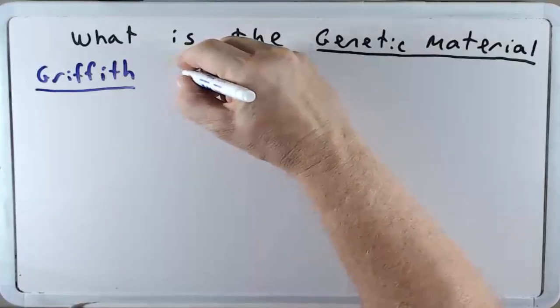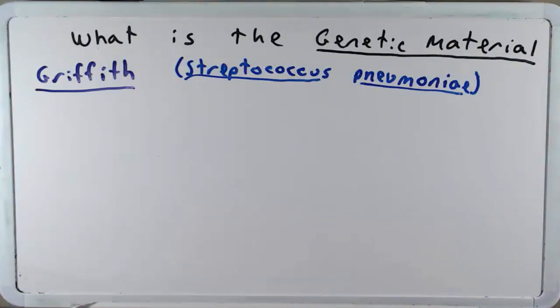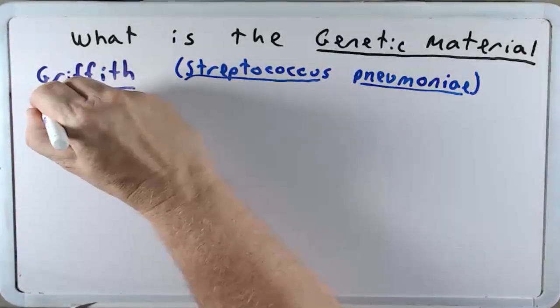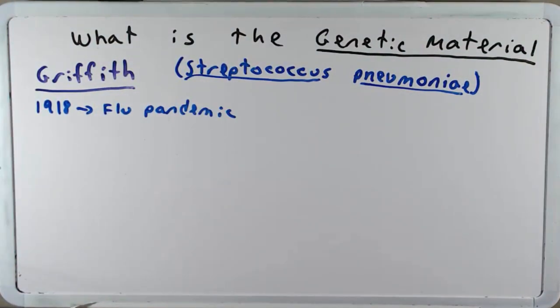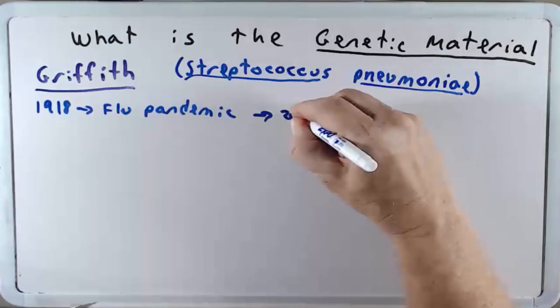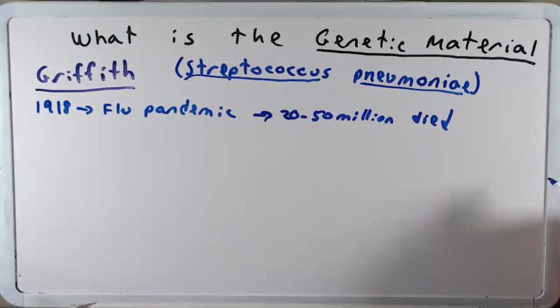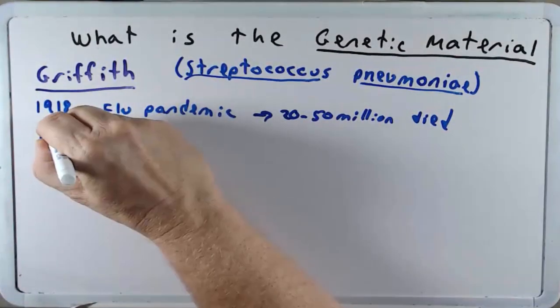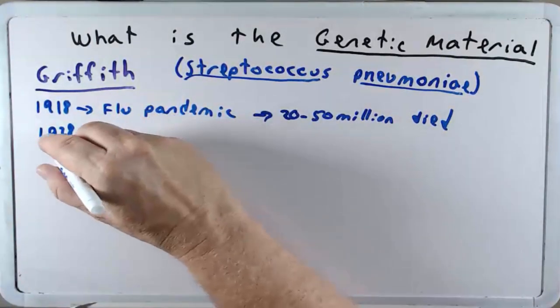And he worked with a bacterium called Streptococcus pneumoniae. So why was he studying this bacterium? Well it wasn't by accident. He was studying it because in 1918 there was a flu pandemic. During this time around 500 million people were infected with the flu and about 20 to 50 million people died.